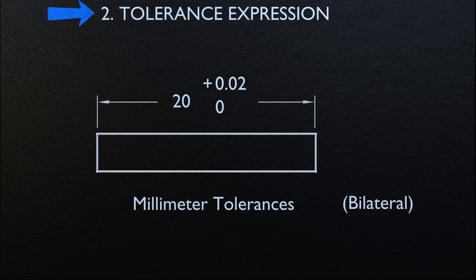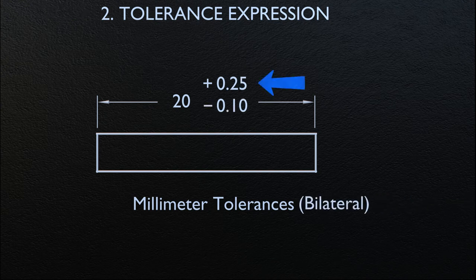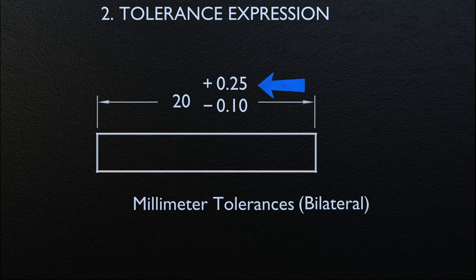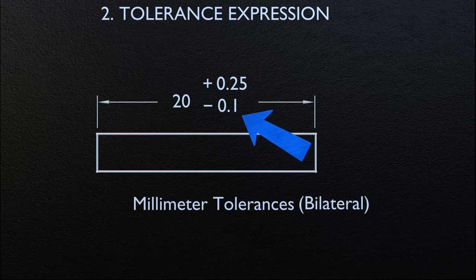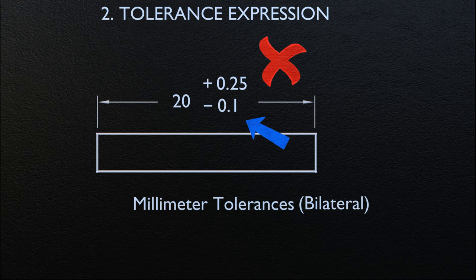For bilateral tolerancing, both the plus and minus values must have the same number of decimal places, using zeros where necessary. In this example, the value of 20 is the nominal size. If the decimal places are not the same, it is not good practice — we must keep the same decimal places, although the trailing zero does not have significance after the decimal point. We have to keep the zero.